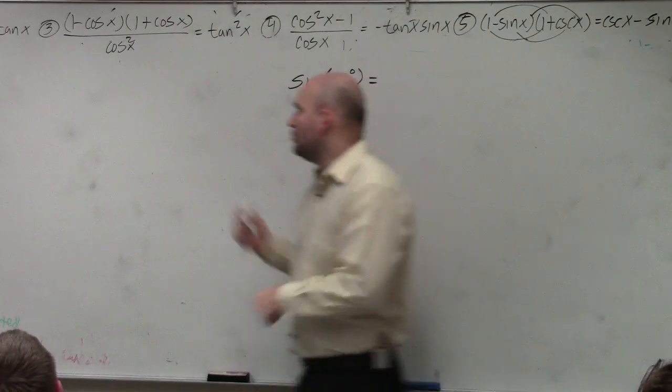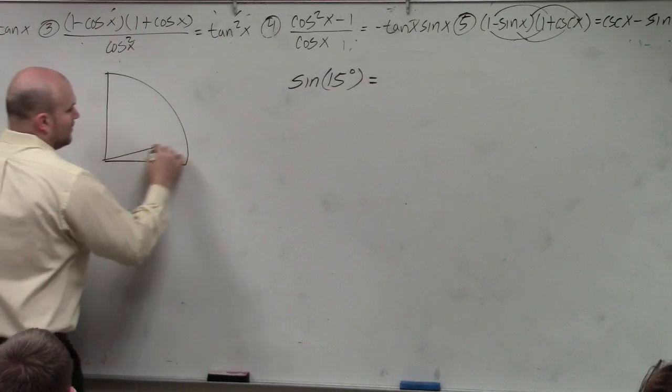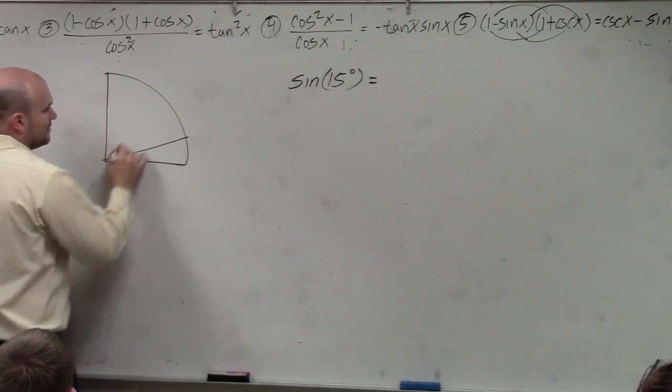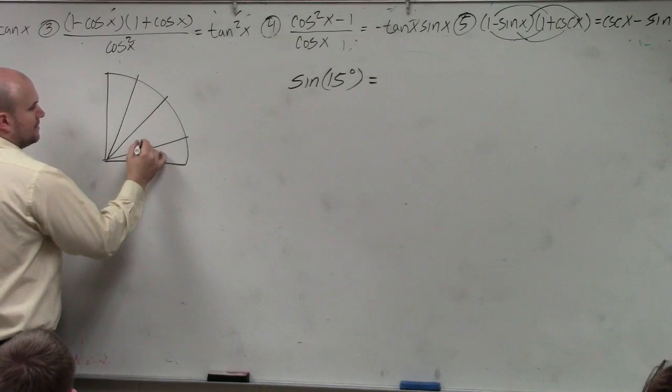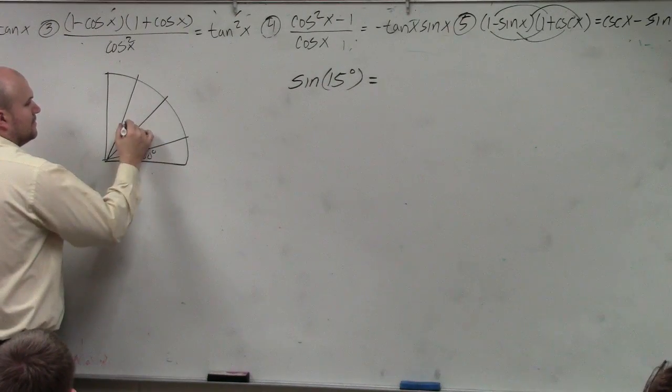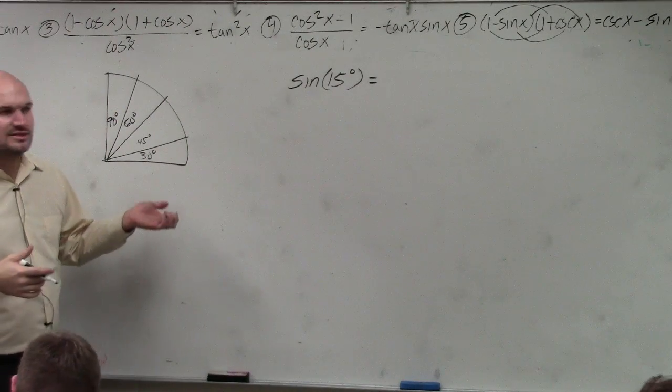So if you guys remember, in the unit circle, there's only so many angles we have, right? We have 30, 45, 60, and 90, right? And you guys could do radians as well.